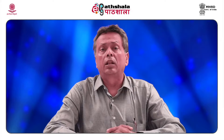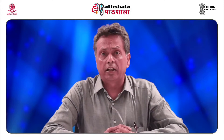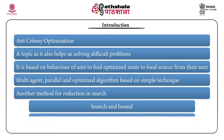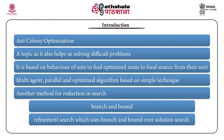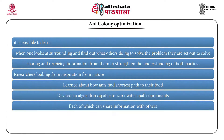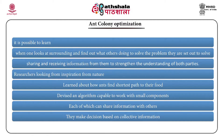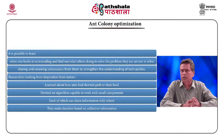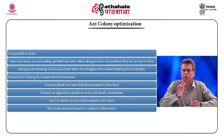Welcome back to the 12th module of AI, in which we are going to talk about a few more search algorithms. One is ant colony optimization, another is branch and bound, and the third is called refinement search. Ant colony optimization is a very popular algorithm; it's still being used, and it's an interesting idea that many others have built upon.